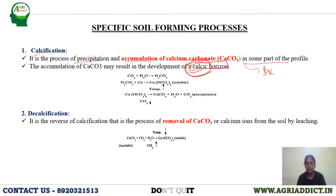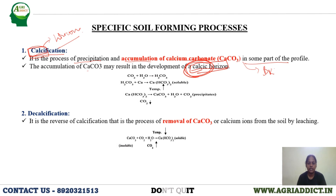Due to this calcic horizon formation, the term calcification is given — half the word comes from the name of the horizon. Calcification occurs when there is high temperature and low CO2. This is all dependent on Le Chatelier's principle, which we study in higher classes. For detailed explanation please login to our live sessions, where we discuss which factors influence calcification more.